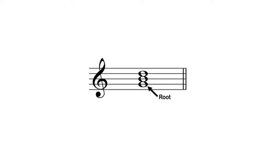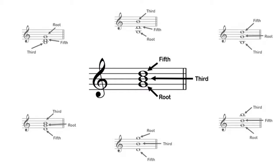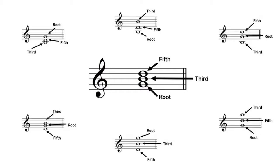The pitch that is immediately above the root is called the third. The pitch above that, the one that completes the triad, is called the fifth. The root, third, and fifth are the three chord members and can be arranged in many different configurations without changing the fundamental characteristics of the triad.